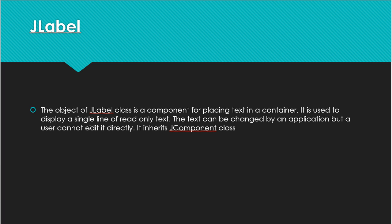JLabel is used to display a single line of read-only text. You can read it but cannot do any actions with the label — you cannot write to it. The text can be changed by the application, but the user cannot edit it directly. The programmer can change it, but the user can only read that text. JLabel inherits the JComponent class.